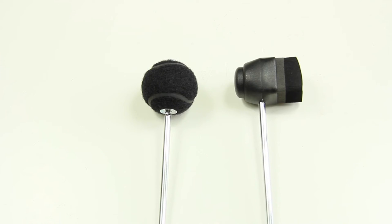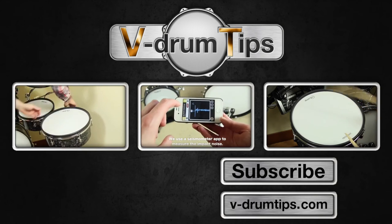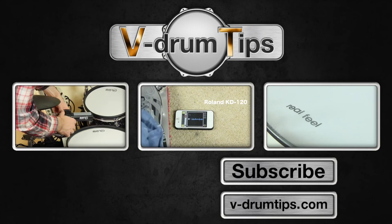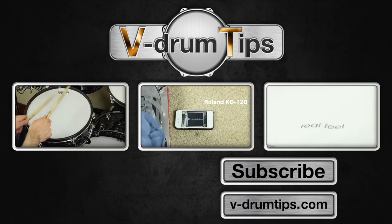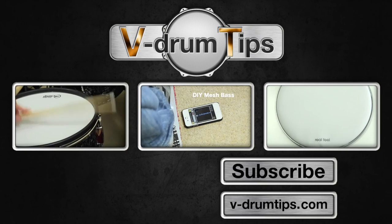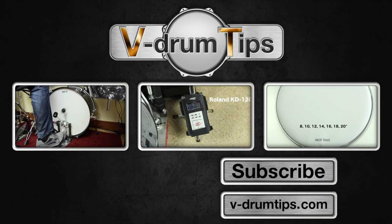Find the links for both beaters in the description below. Click the left box to watch the A2E conversion series. Click the box in the middle to hear the noise difference between a KD-120 and a 20-inch DIY bass drum. Or click the right box to see a video about different types of mesh heads. See you next time!